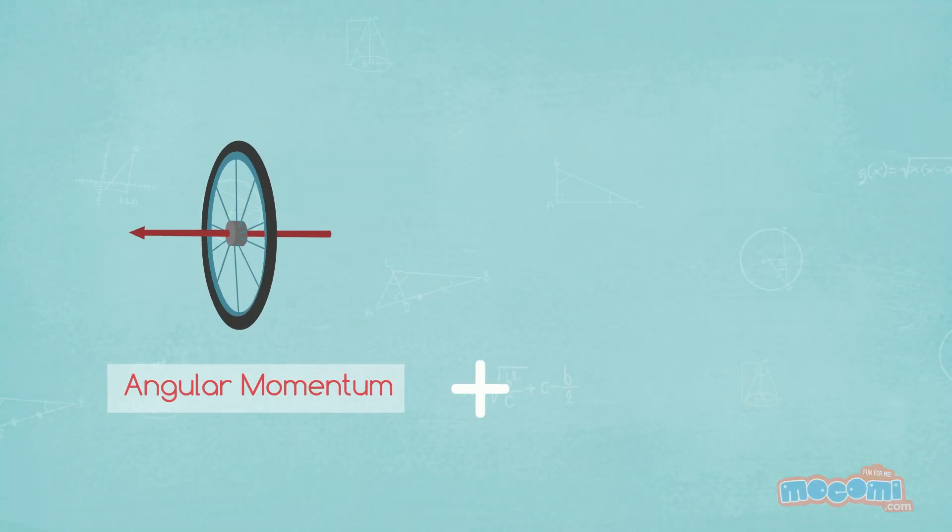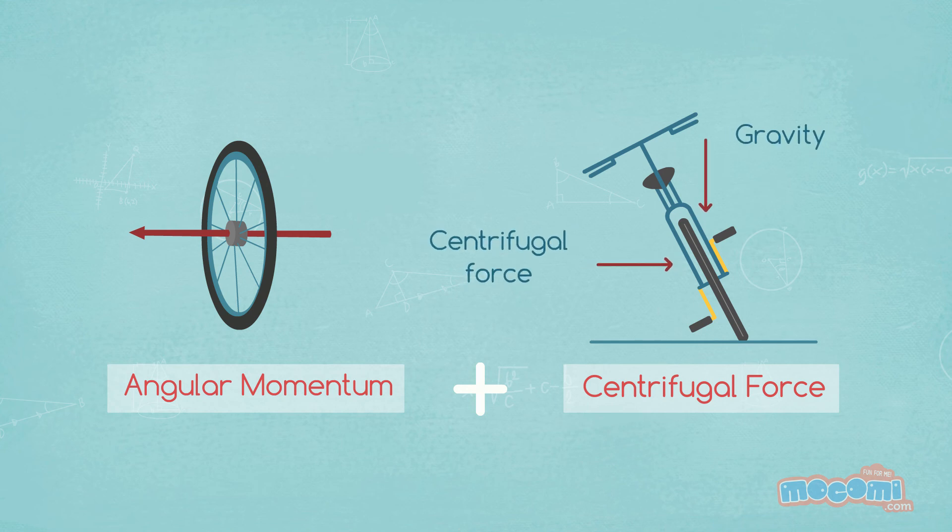So now you know that angular momentum and centrifugal force keeps a bicycle upright when it is moving.